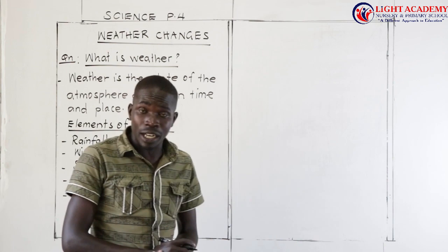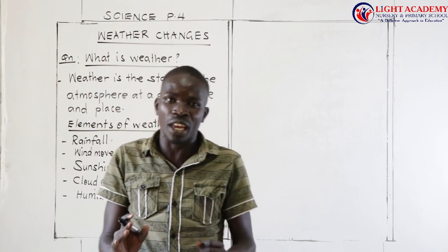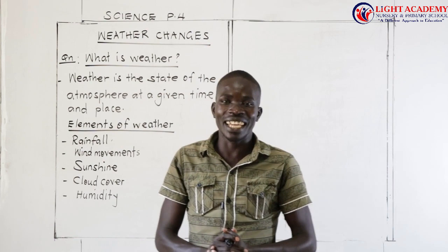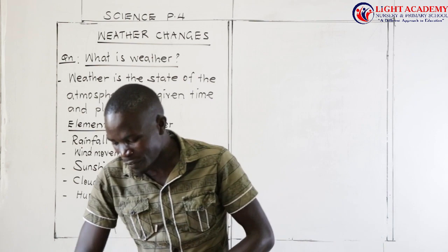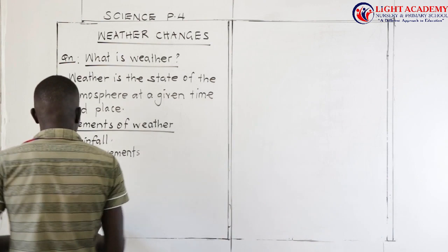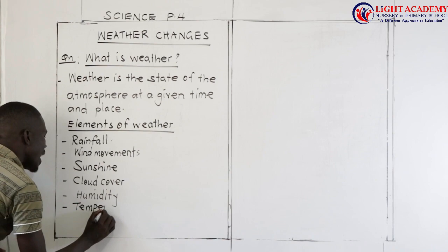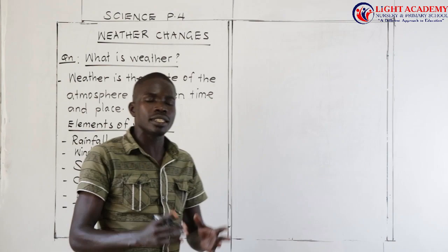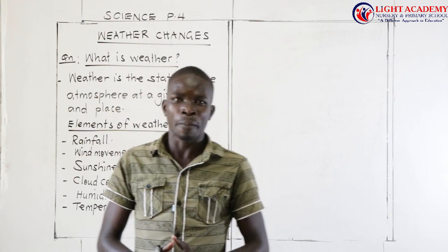Another element of weather is what we call humidity. When I talk about humidity, I simply mean the amount of water in the atmosphere. Humidity is also an element or factor of weather. Then we have what we call temperature, which is also another element of weather. Temperature is the degree of hotness or coldness of a place.